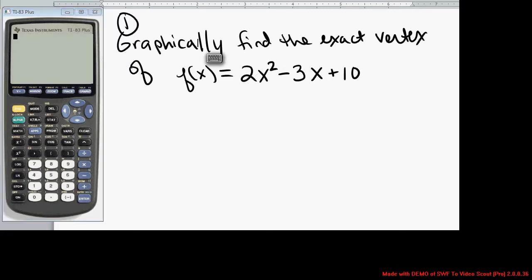We see that this is a quadratic function. The leading coefficient is positive. Remember the leading coefficient, the coefficient of x squared. It's a positive number, so we know this would be a graph that is a parabola that opens up. The vertex will be a minimum.